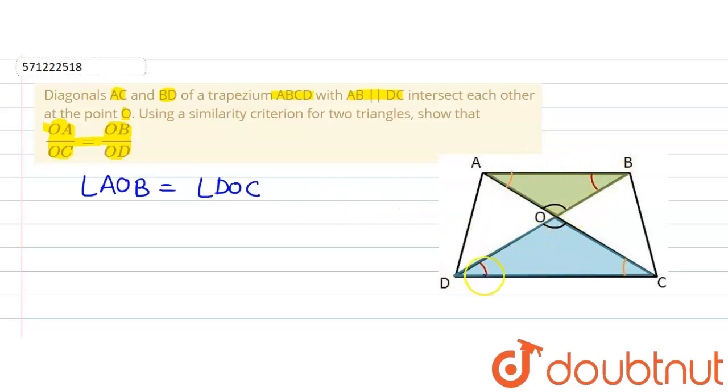Now AB is parallel to DC. That means angle ABO will be equal to angle ODC. Alternate interior angles are equal because AB parallel DC and BD is a transversal. So we can write angle ABO equals angle ODC.